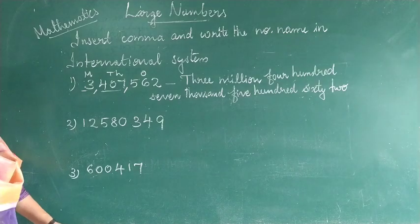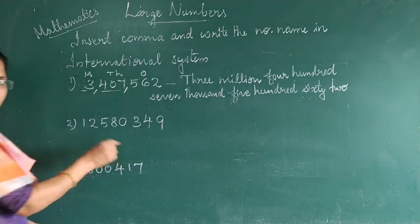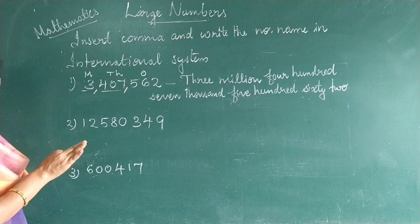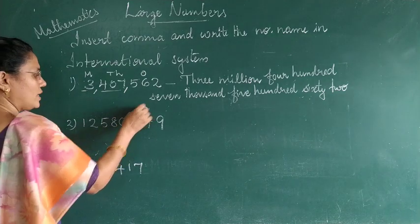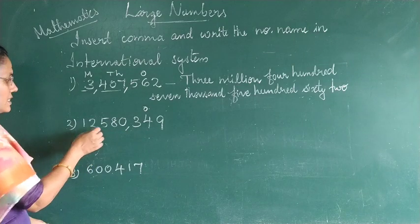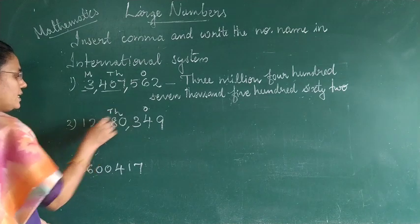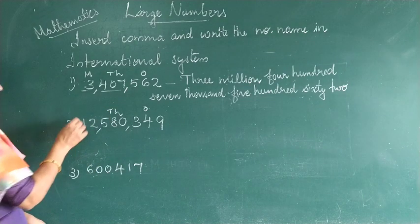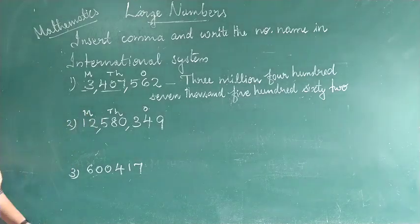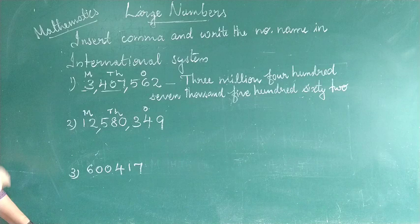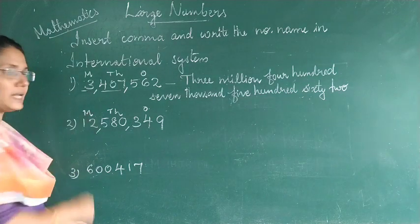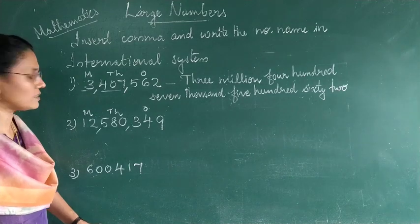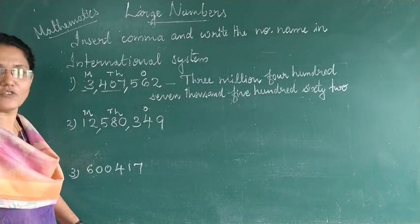For the second question, always follow the same method: from right to left, count three digits for the ones period, insert comma, count the next three digits for the thousands period, insert comma, and the remaining digits form the millions period. Read each group together with its group name. The number is 12,580,349.